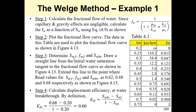The next thing is to determine the saturation at the shock front, the fractional flow of water at the shock front, and the average water saturation behind the front at breakthrough. Draw a straight line from the initial water saturation tangent to the fractional flow curve, as shown in figure 4.3. Extend the line to where fw equals 1, and read the values: 0.6, 0.62, 0.88, and 0.68 respectively.